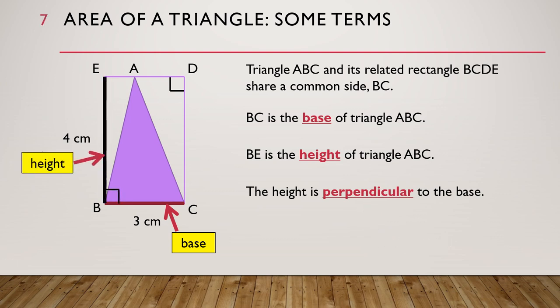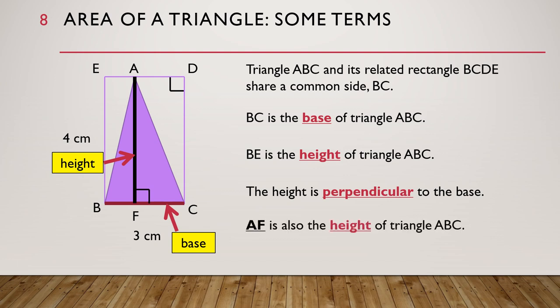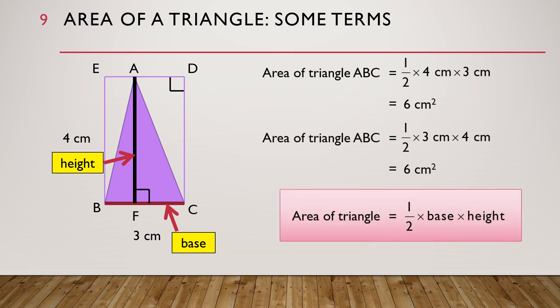Usually the height of triangle ABC is not shown as the side of the rectangle. Instead, it is shown as a straight line from vertex A down to the base BC. So this line AF is also the height of triangle ABC, and in this triangle AF is also 4cm.